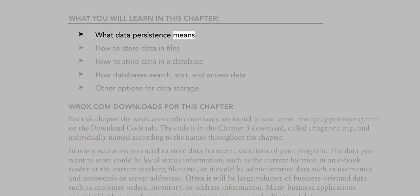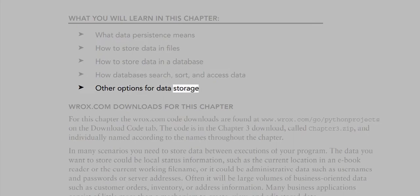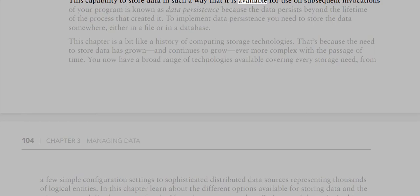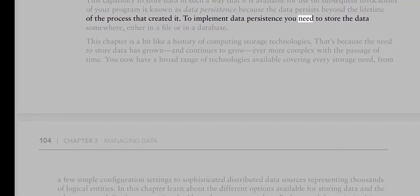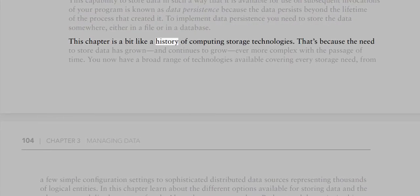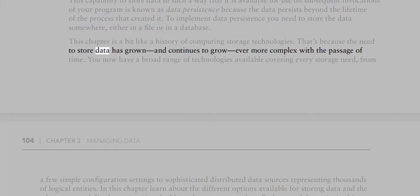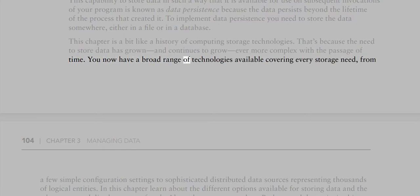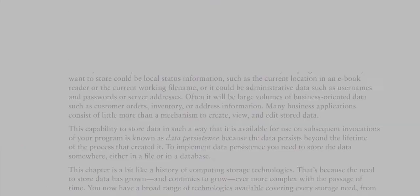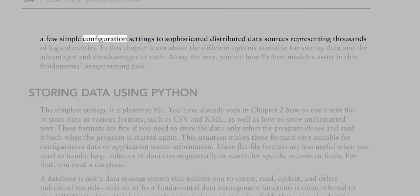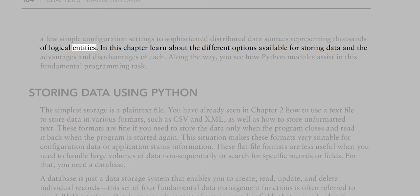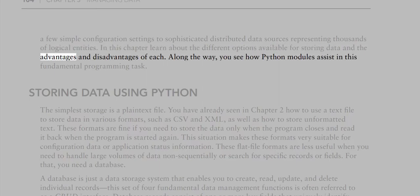This chapter covers what data persistence means, how to store data in files and databases, how databases search, sort, and access data, and other options for data storage. In many scenarios you need to store data in such a way that it is available for use on subsequent invocations of your program — this is known as data persistence, because the data persists beyond the lifetime of the process that created it.